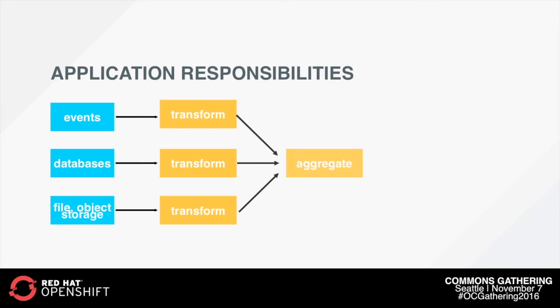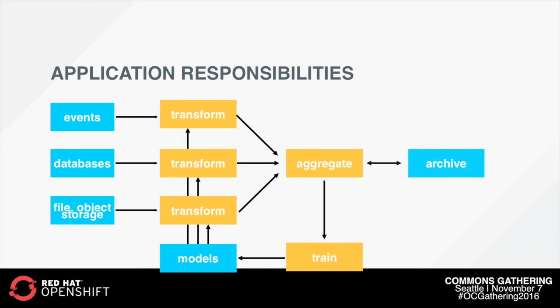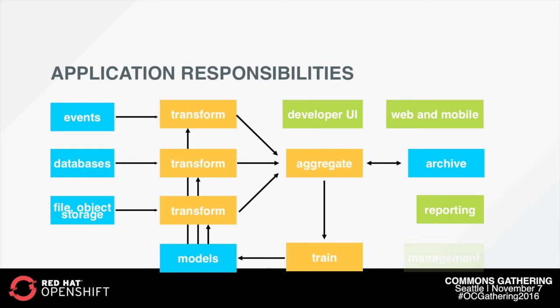Let's start by taking a high-level look at what a data-driven application actually has to do. A data-driven application is really a lot like any other application, except you're typically transforming and aggregating data from different sources, using that to train predictive models, and then using those predictive models to transform and make predictions from your data. You're saving predictions and raw data to archival storage, and you're supporting a few different kinds of user interface — letting developers or data scientists install new models or modify how models are trained, a typical end-user web or mobile UI, a reporting UI for the business side, and a management interface so you can tune your deployment and make sure it's performing well.